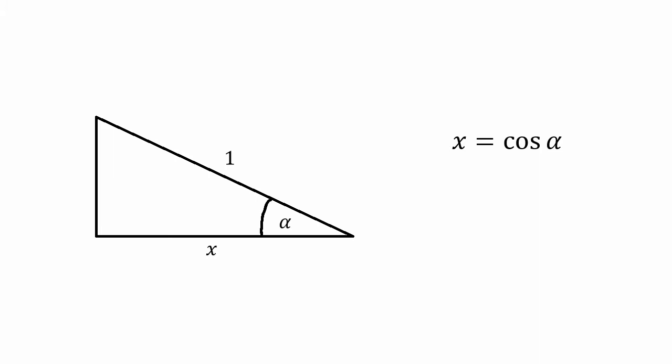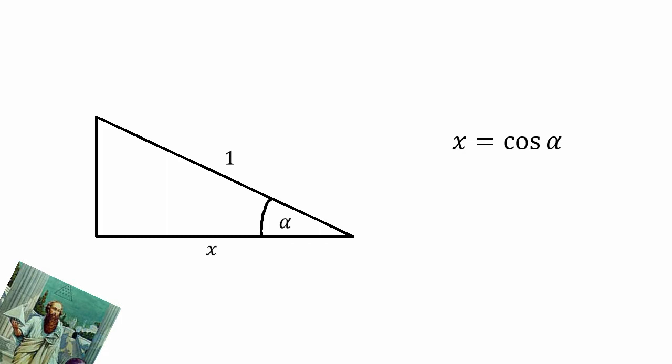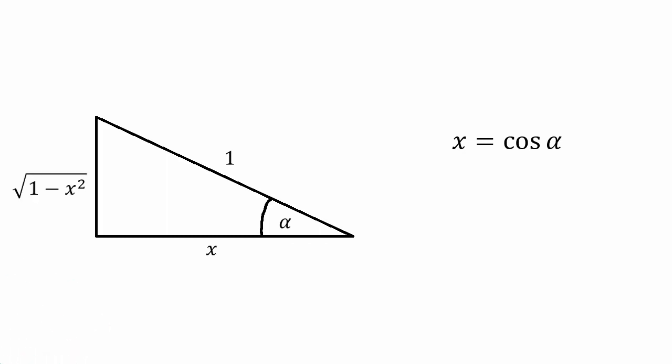Now, the other side I could find very easily using the Pythagorean identity, and it would equal to the square root of 1 minus x squared. And then because alpha is equal to arccos of x, it's super easy to find what sine of arccos of x equals to.